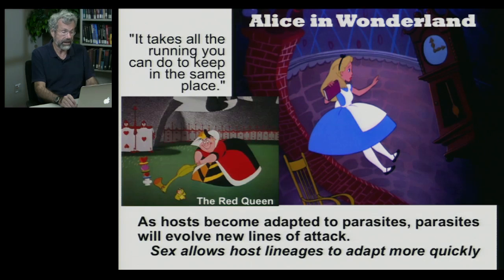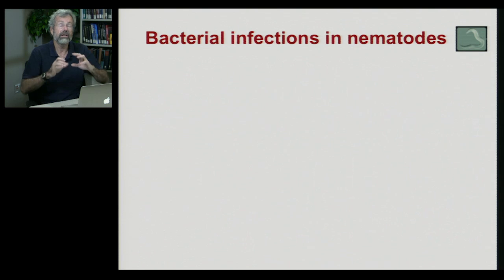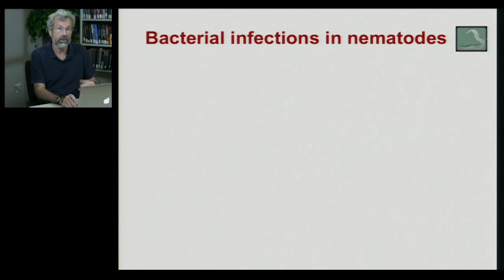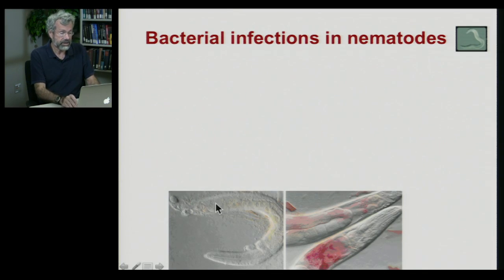As hosts become adapted to parasites, parasites evolve new lines of attack, and sexual reproduction allows host lineages to adapt more quickly. We can look at this experimentally. Our host species is a nematode — a small worm called Caenorhabditis — a very small, simple organism that only lives for a couple of months maximum. It is infected by bacteria whose lifespan is just a few minutes, so bacteria can evolve to infect this nematode. This electron micrograph shows where the bacteria have invaded the nematode's body.